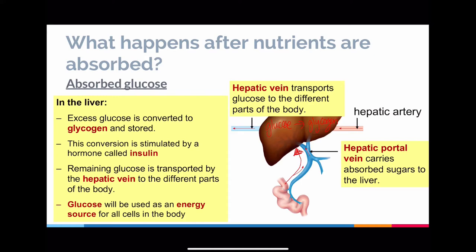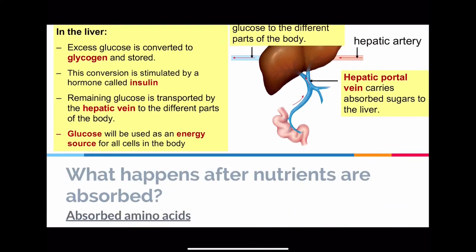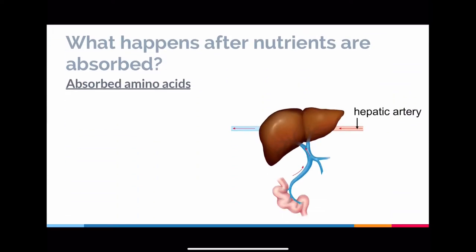The remaining glucose travels through to the rest of the body, where it is used as an energy source for cells to release energy for whatever function they need. So this is how the body keeps in check the nutrients it is absorbing — the absorbed glucose goes to the liver, the liver controls excess by converting it to glycogen, and releases the remaining glucose out to the rest of the body.